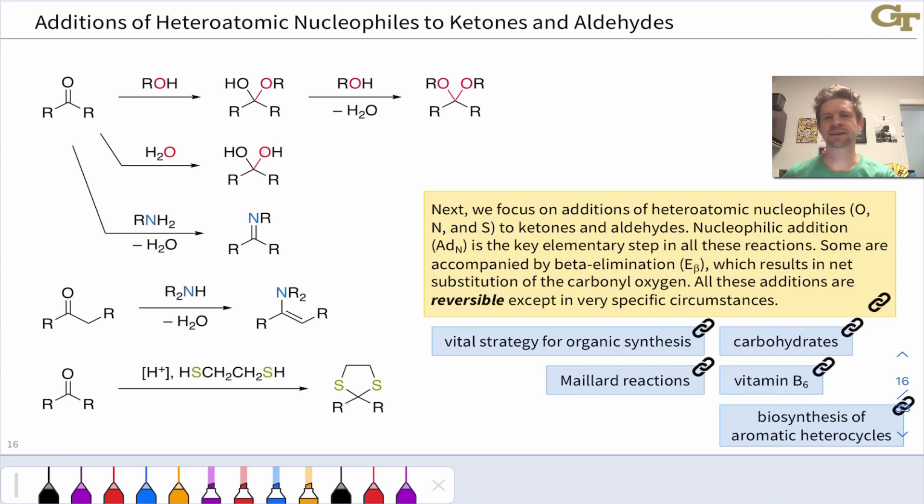This slide is an overview of the additions of heteroatomic nucleophiles to ketones and aldehydes. We've previously seen the Wittig reaction and organometallic nucleophiles where nucleophilic carbon is adding to the carbonyl carbon. Now we're going to shift to looking at oxygen, nitrogen, and sulfur predominantly as the nucleophilic players in these addition reactions.